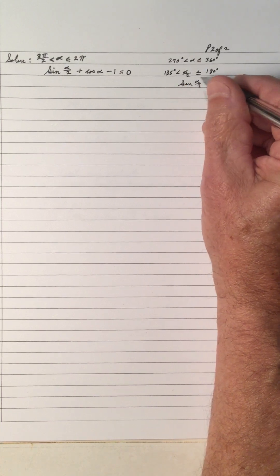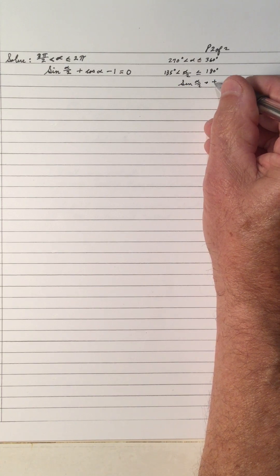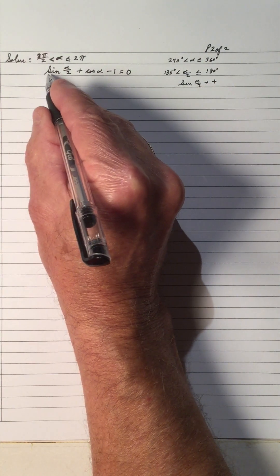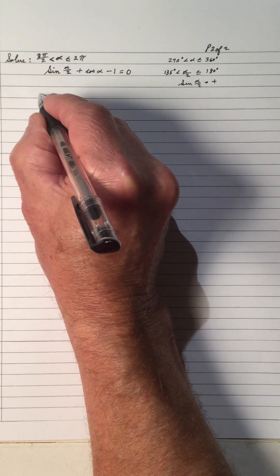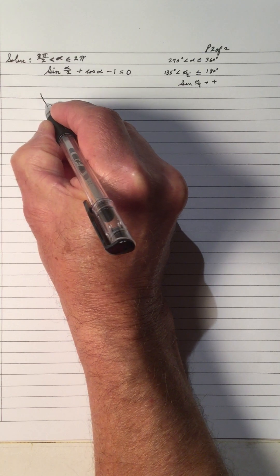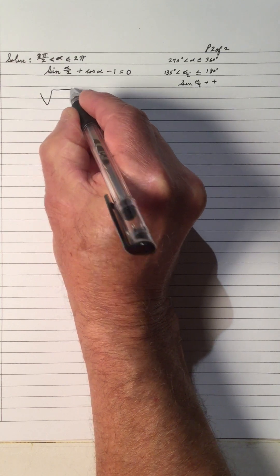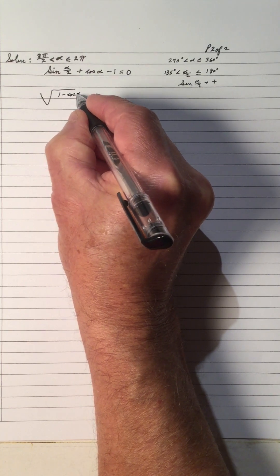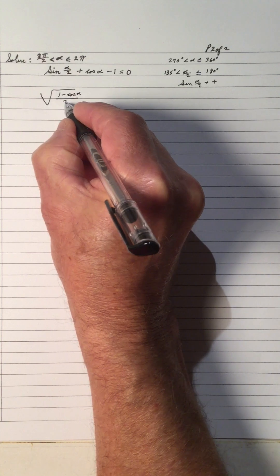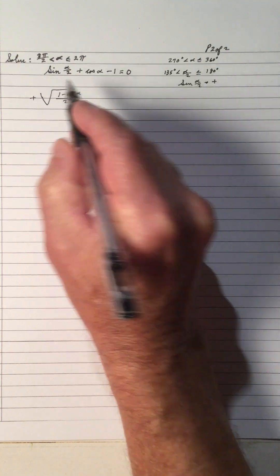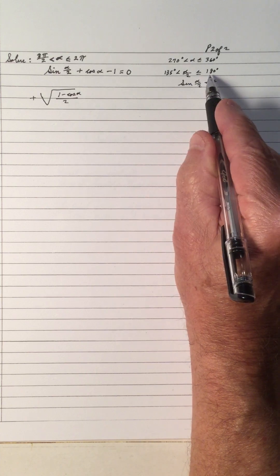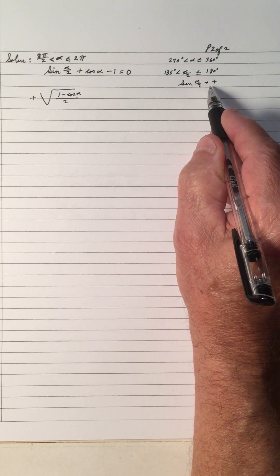If it's in the second quadrant, that means the sine of α/2 is positive. The sine is positive in the second quadrant. Hence, the equation for sine of α/2 is the positive square root of (1 - cos α)/2. Again, α/2 is between 135 and 180, so it's positive.